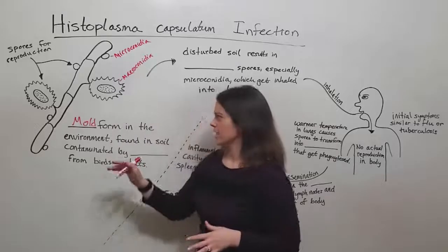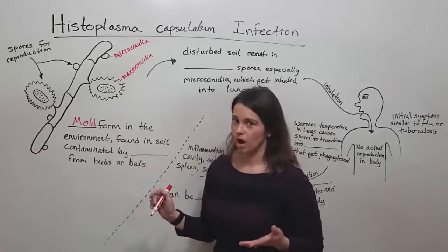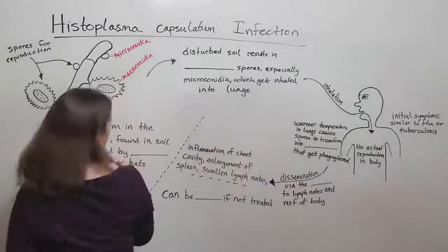And in particular, it's found in soil that has been contaminated by droppings from birds and bats.